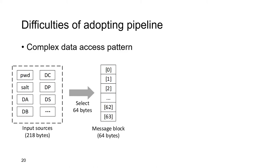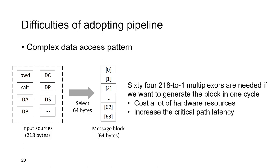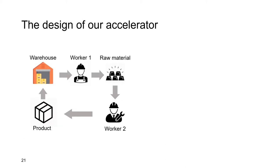The last problem is the complex data access pattern. The generation of a block is similar to selecting 64 bits from the data buffer. However, there are no simple rules for hardware to determine which bytes in the input sources should be placed in which positions in the message block. If we want to generate the block in one cycle, a total of 64 218-to-1 multiplexers are needed, which introduces significant overhead to hardware resources and increases the critical path latency.